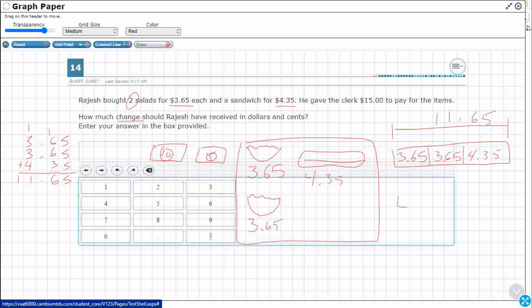So I'm going to draw a new strip diagram because now I'm comparing. What's the difference here between $15 and $11.65? That means we got to subtract those two. Let's see how much change Rajesh should get back.